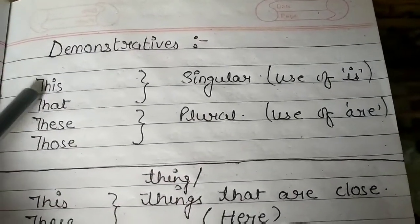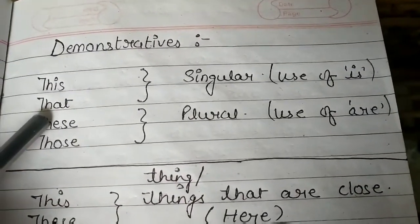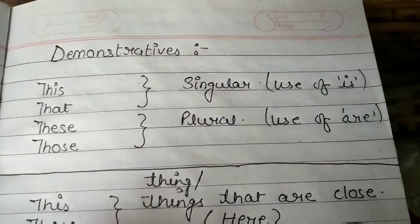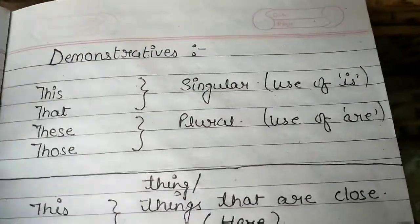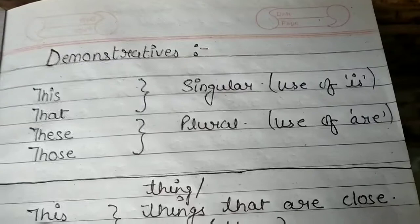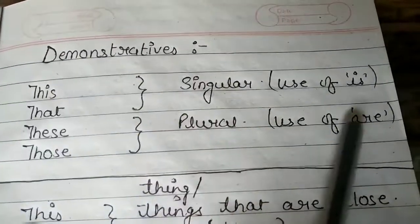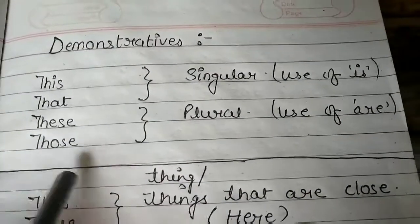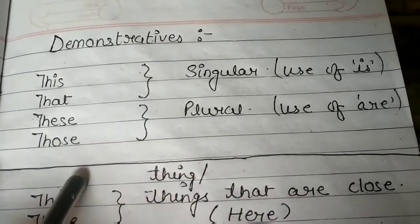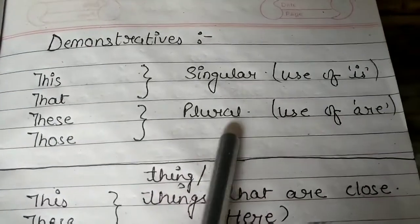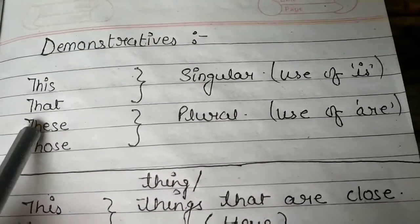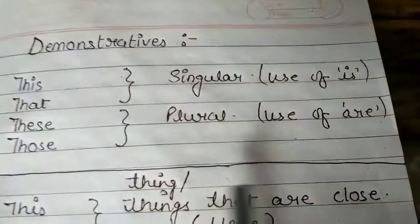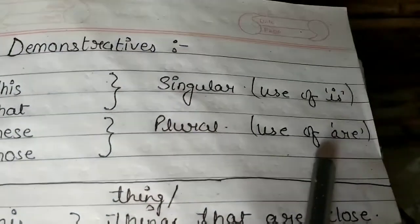This and that are singular in nature. Whenever we are going to indicate something with this or that, we will always use 'is' with this and that. And these and those are plural in nature, so whenever we use these and those to indicate things, we are going to use 'are' with them.